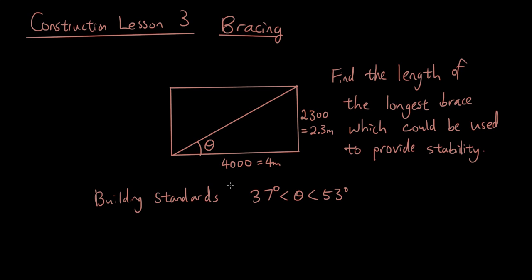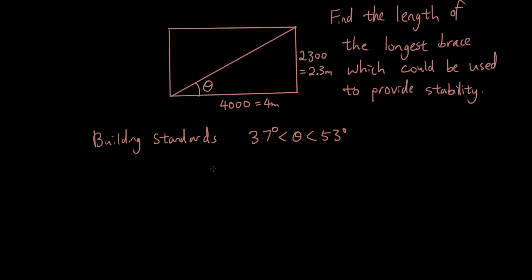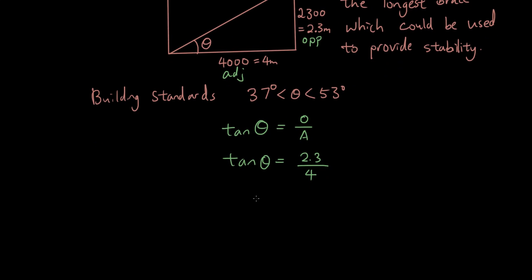So let's find theta first to see whether it satisfies the building standard. To find theta you would use trigonometry. You would label the sides first. We have theta over here, so this side is the opposite, this side is the adjacent, so we have tangent theta equals opposite over adjacent. Then we have tan θ = 2.3 / 4, so rearranging it to make theta the subject, θ = tan⁻¹(2.3 / 4).